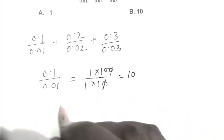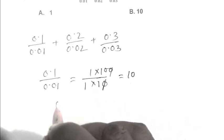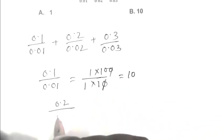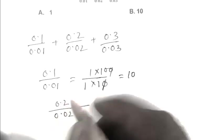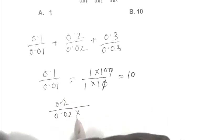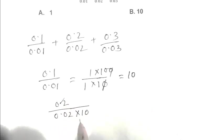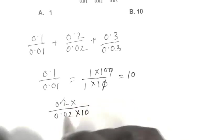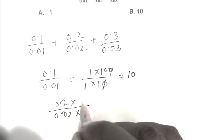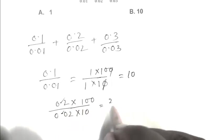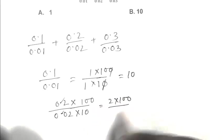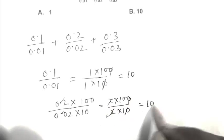Second part, 0.2 upon 0.02. If we eliminate the point we multiply by 10, and this point by 100. So 2 multiplied by 100, 2 multiplied by 10. The 2s cancel, that is 10.